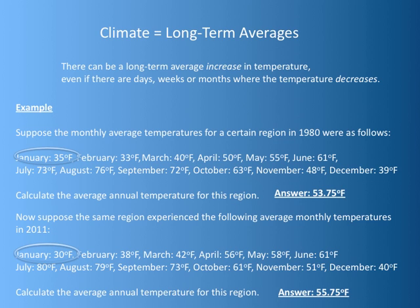For example, look at January. Somebody living in 2011 who is skeptical of climate change may say, 'It was only 30 degrees for our average temperature in January, and in 1980 it was 35 degrees — much warmer. Clearly, global warming isn't taking place.' But have a look at July, where you see that this difference is made up later in the year. Any individual month by itself does not tell you much until you look at the average over the entire year.